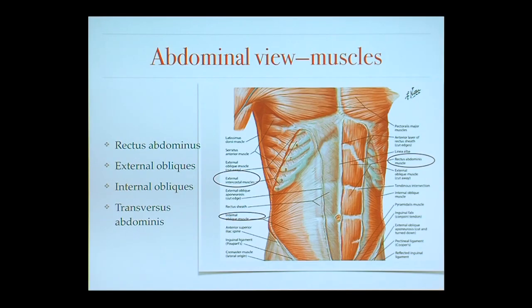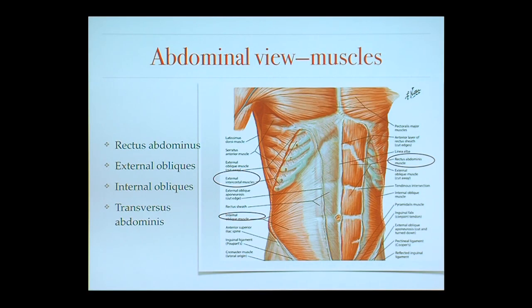Anytime we're talking about the pelvis, it's important to talk about the abdominal muscles as well, because they're intimately involved with the pelvic floor. Starting from the outside, everyone is familiar with the rectus abdominis, which are the central muscles. The connection between them is the linea alba, which becomes darker in pregnancy and is called the linea nigra. On the sides are the external and internal obliques — the external obliques point down like pockets into pants, and the internal obliques go the opposite direction. Underneath is the transversus abdominis.